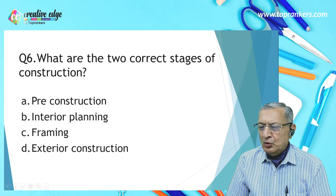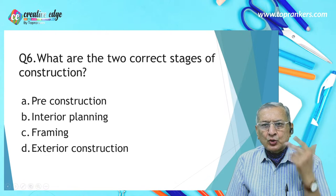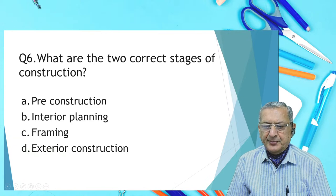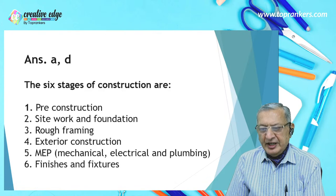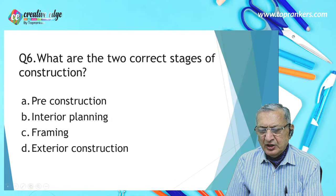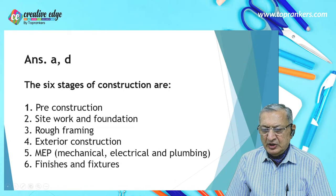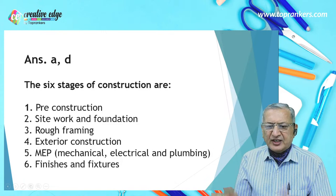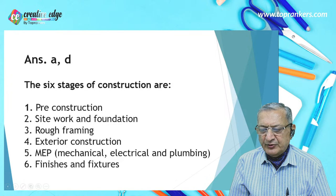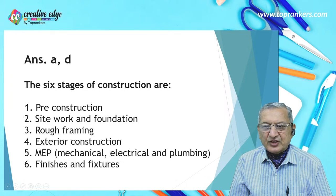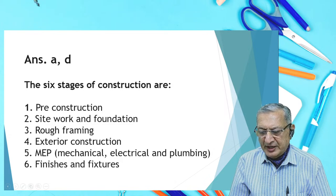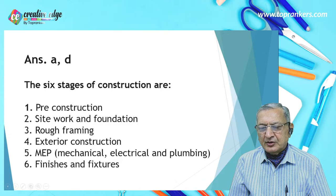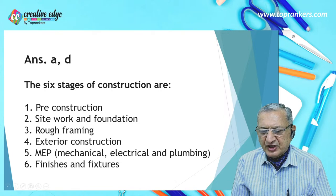What are the two correct stages of construction? Select two from: pre-construction, interior planning, framing, and exterior construction. A and D are the correct answers — pre-construction and exterior construction. The six generally accepted stages of construction are: pre-construction, site work and foundation, rough framing, exterior construction, MEP (mechanical, electrical and plumbing), and finishes and fixtures.